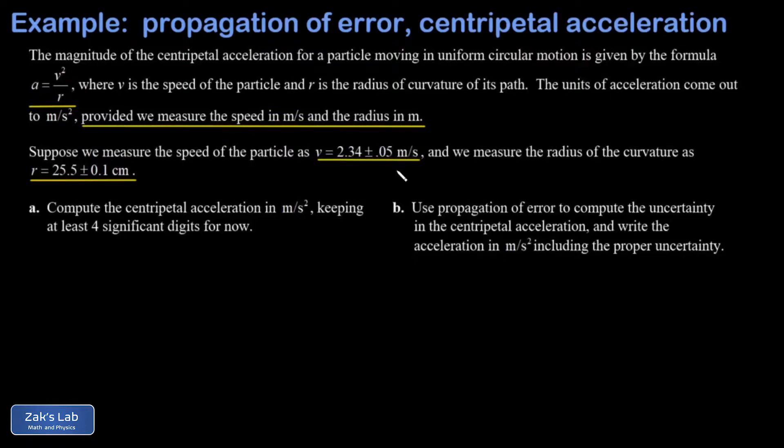Provided we measure the speed in meters per second and the radius in meters, we'll get the proper units of meters per second squared for this acceleration. That means we should convert the radius to meters immediately, so that's 0.255 plus or minus 0.001 meters.